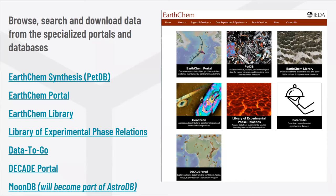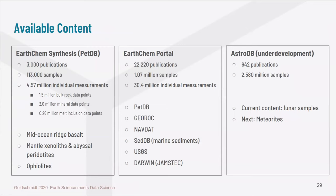The last access option is the DECADE Portal, where geochemical analyses from multiple databases are linked directly to individual volcanoes. In terms of content, we have over 4.5 million individual measurements in the EarthChem synthesis at this time. These are compiled within the EarthChem Portal, with data added from multiple databases such as GeoRoc and NAVDAT. We are working on releasing the AstroDB, where all of the MoonDB data is incorporated. We are working on lunar samples now, and the next phase will be to insert meteorites.